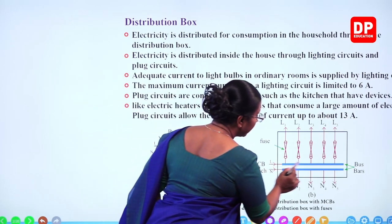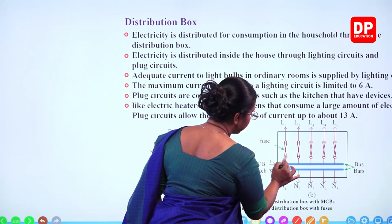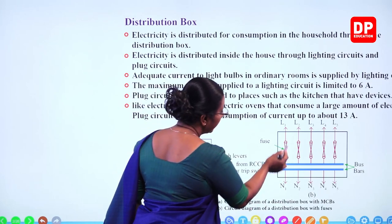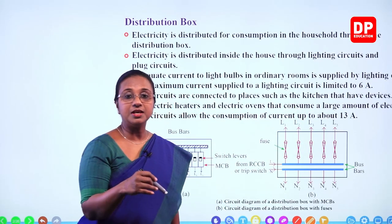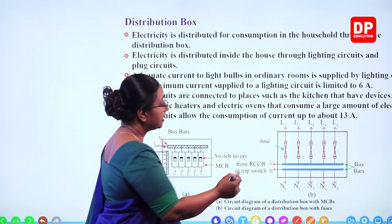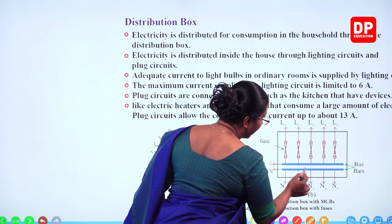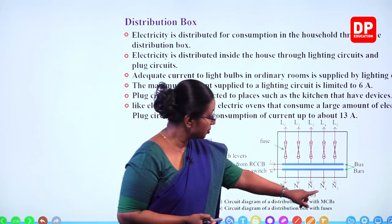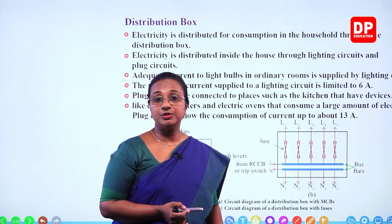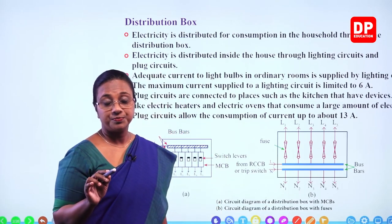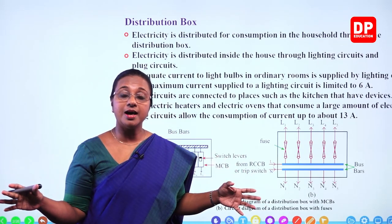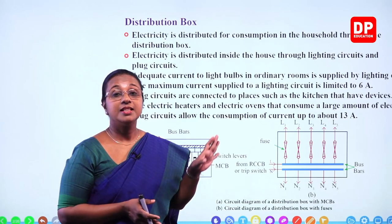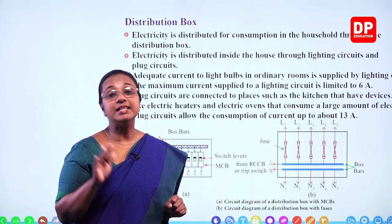You should not connect a plug socket to a lighting circuit, and light bulbs should not be connected to the plug circuit. Only bulbs are connected to the lighting circuit with a 6 ampere fuse, and only plug sockets are connected to the plug circuit with a maximum 13 ampere fuse. This prevents damage to all electrical appliances in the household. The distribution box with MCBs distributes current to the two types of circuits: the lighting circuit and the plug circuit.